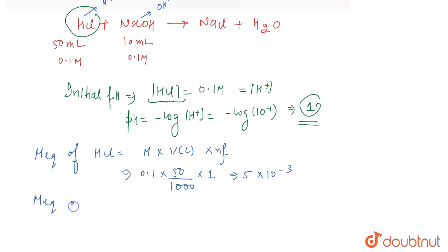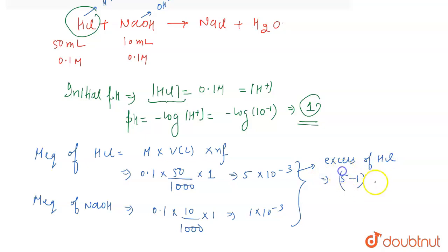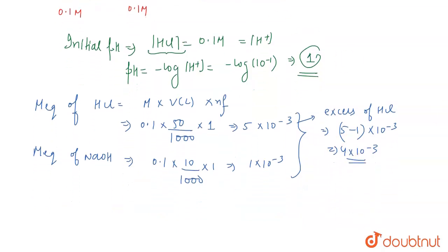Similarly, we calculate the milliequivalents of NaOH: molarity 0.1, volume 10/1000, N factor 1 (since NaOH gives 1 OH⁻ ion), giving 1 × 10⁻³. We can infer that the milliequivalents of HCl are more than the milliequivalents of NaOH, so there is excess HCl. The excess milliequivalents of HCl = (5 − 1) × 10⁻³ = 4 × 10⁻³.